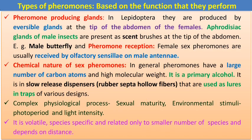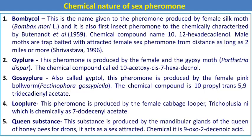The chemical nature of sex pheromones involves a large number of carbon atoms. It is a primary alcohol and uses slow-release dispensers as lures in traps of various designs. Sex pheromones are volatile, species-specific, and related to only a smaller number of species, and their effectiveness depends on the distance between male and female.